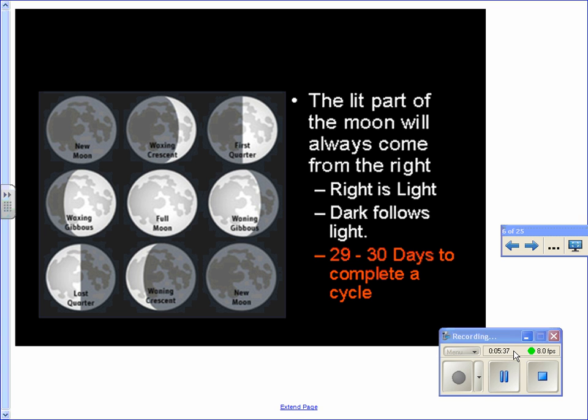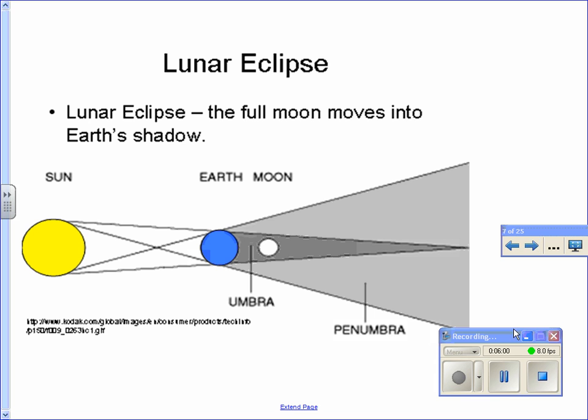It takes about 29 to 30 days to complete a full cycle of the moon. They may ask you how many days between the main four cycles, or how many days are in between one phase of the moon or the other. It just requires a little bit of math. It's 29 to 30 days to complete one full cycle of the moon.